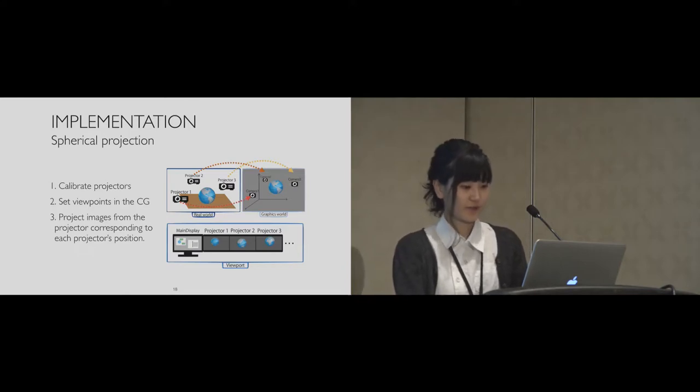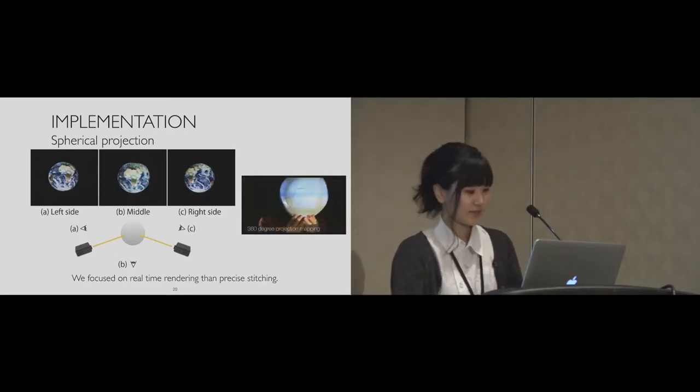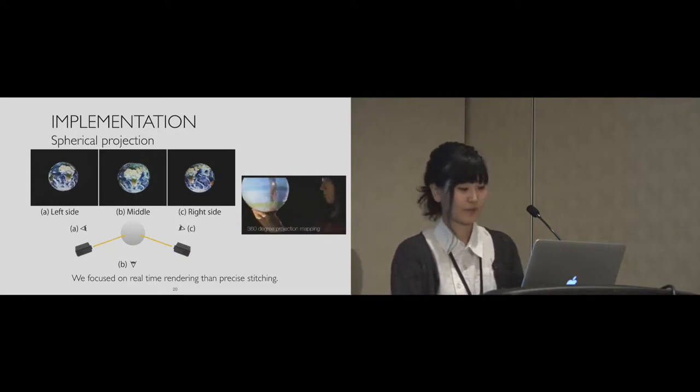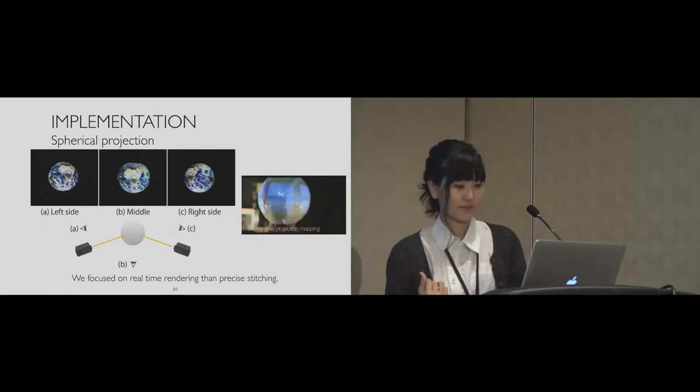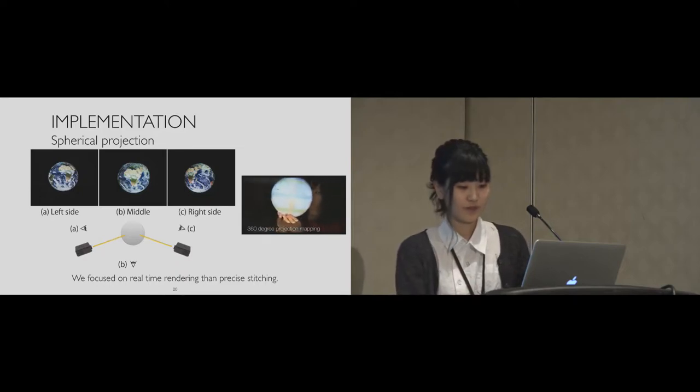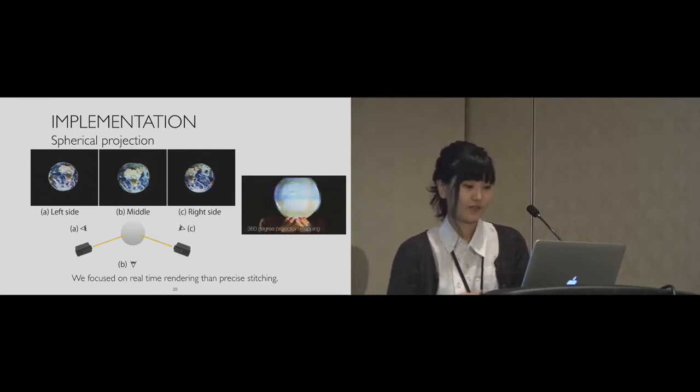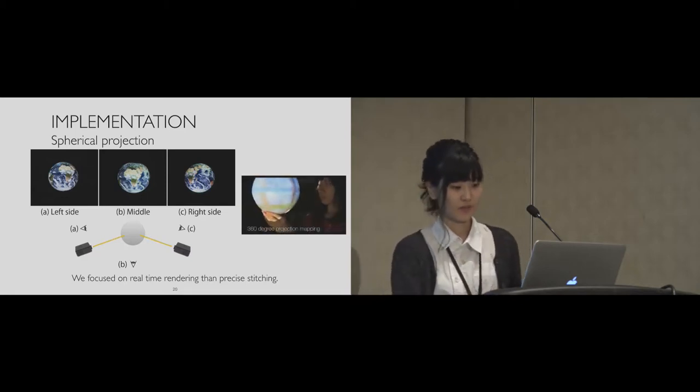To achieve spherical projection, we put multiple projectors in the environment. Each projector is calibrated and based on the calibration data, this system renders the respective view for each projector. These images show an example of sphere mapping. Different images are projected from different directions by using multiple projectors. Figure A and C are the pictures taken from the left side and the right side. Figure B is taken from the middle of the two projectors. In Figure B, the projection from both sides are matched. Boundaries of projection tend to be distorted because of shape of sphere. There is a little gap between the projected images. To assure real-time projection, the system overlays images at the same position from each projector without considering the overlapping part, but the images are matched well as you can see.